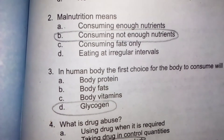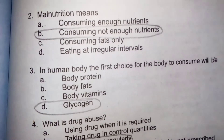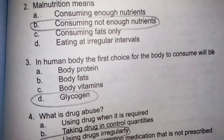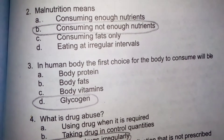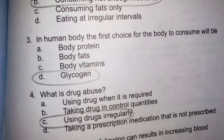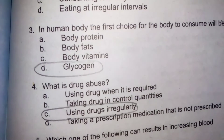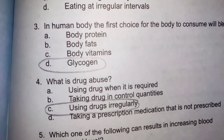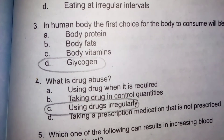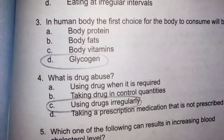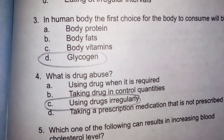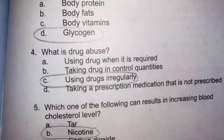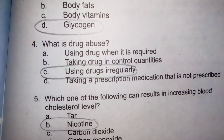In the human body, the first choice for the body to consume will be carbohydrates (glycogen). What is drug abuse? Using drugs irregularly — جب آپ drugs irregularly استعمال کریں تو یہ drug abuse ہے۔